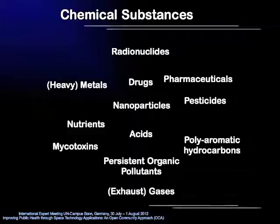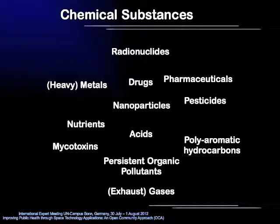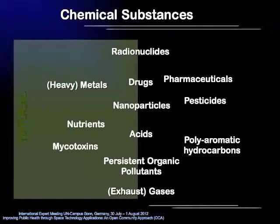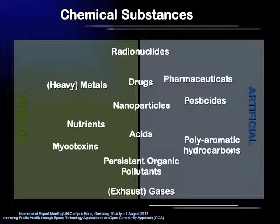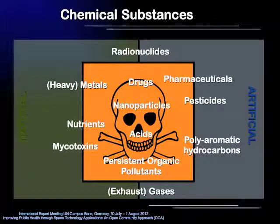They are also often classified based on their application or origin, such as drugs, pharmaceuticals, pesticides, nutrients, mycotoxins, or gases. Chemicals can be of natural origin, artificially reproduced, or in many cases both. One important characteristic of all of them is that depending on their concentration, they can have negative and even toxic effects on the environment and public health.